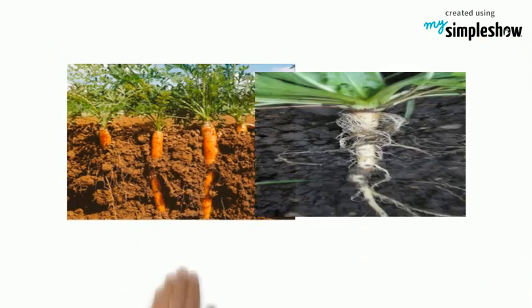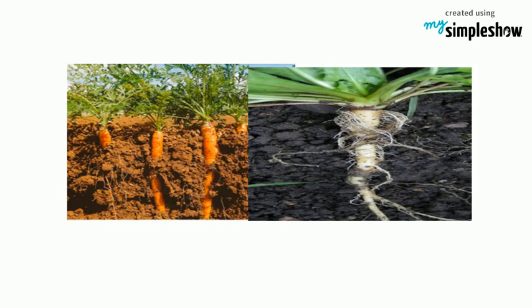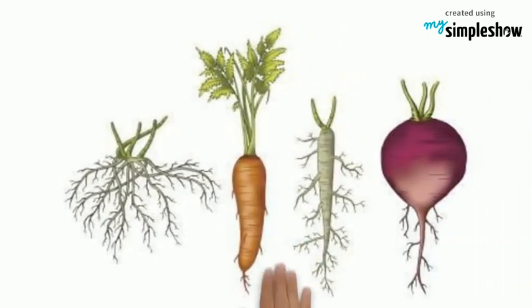In some plants, the taproot also serves as food storage. Examples of the taproot system can be seen in a variety of plants, even the ones we eat, like carrots, turnip, and beets.